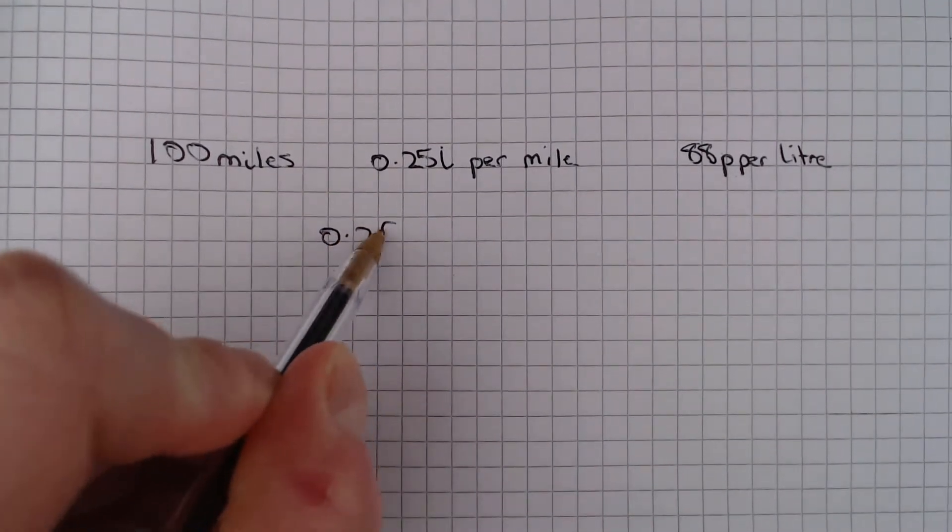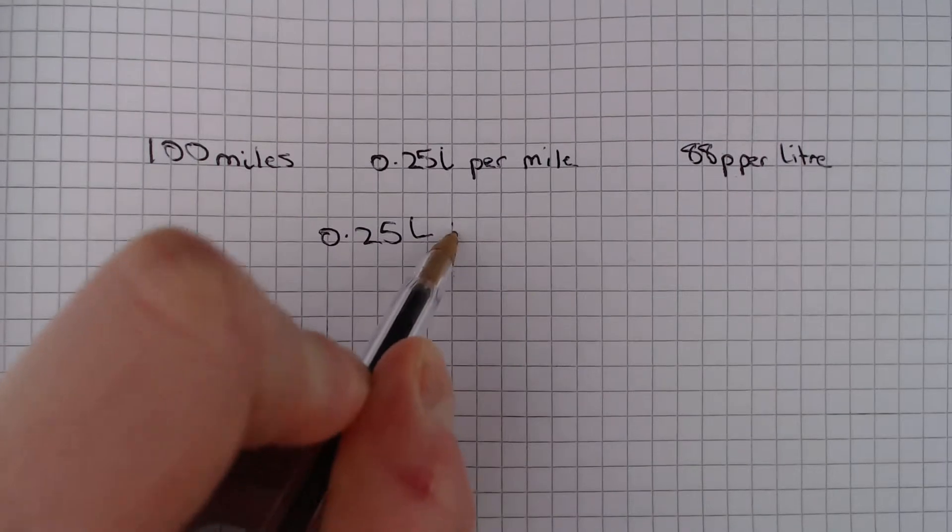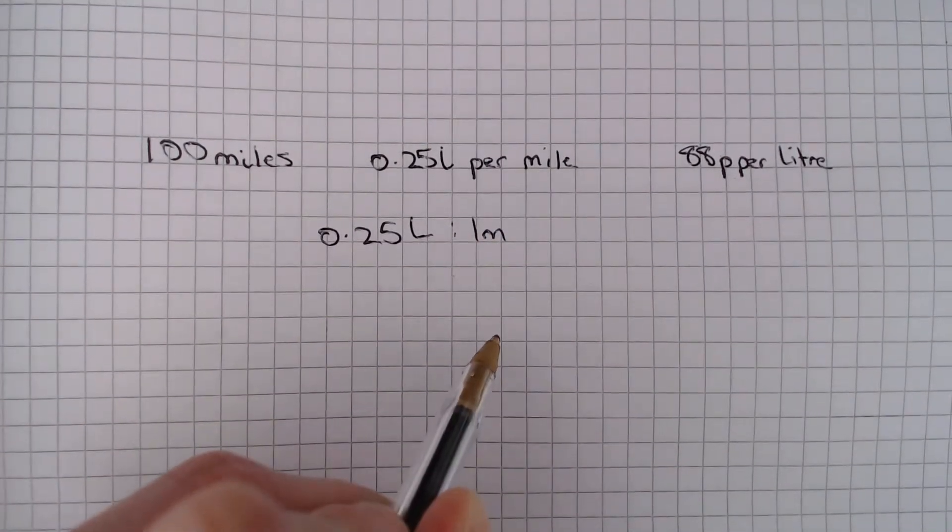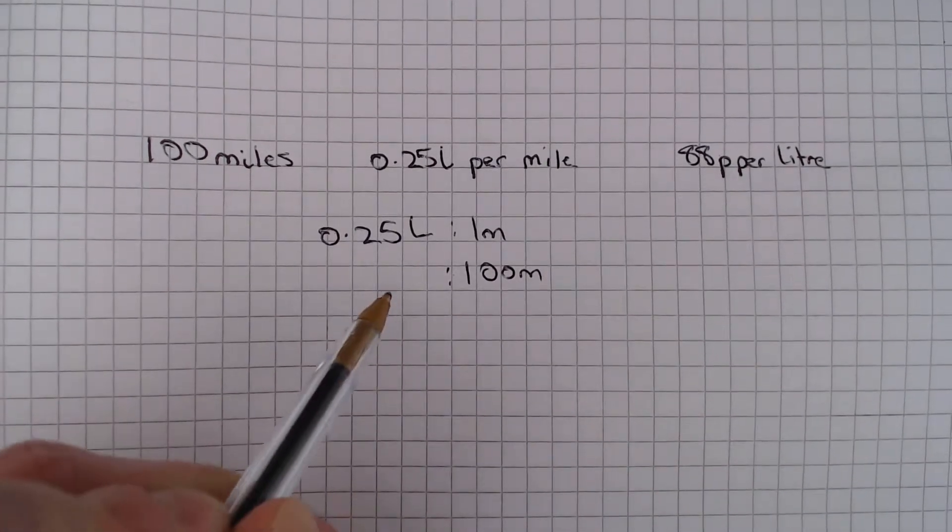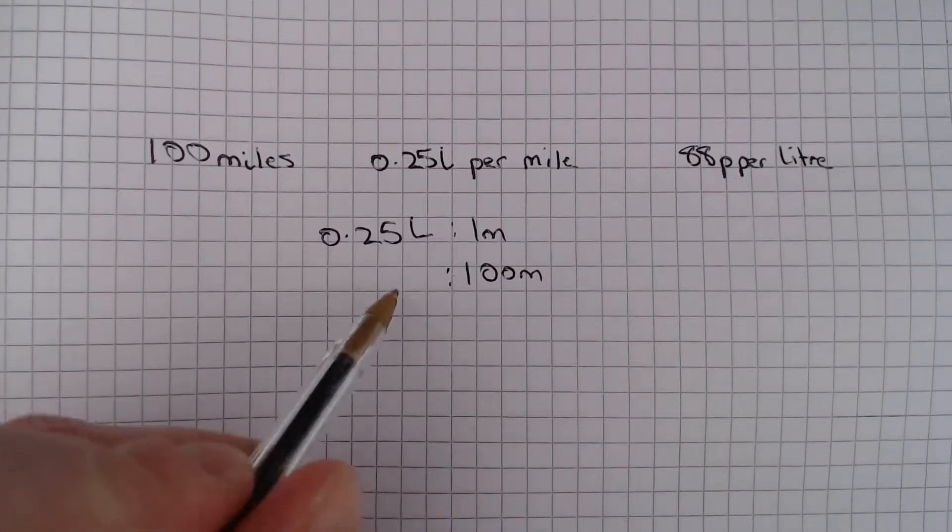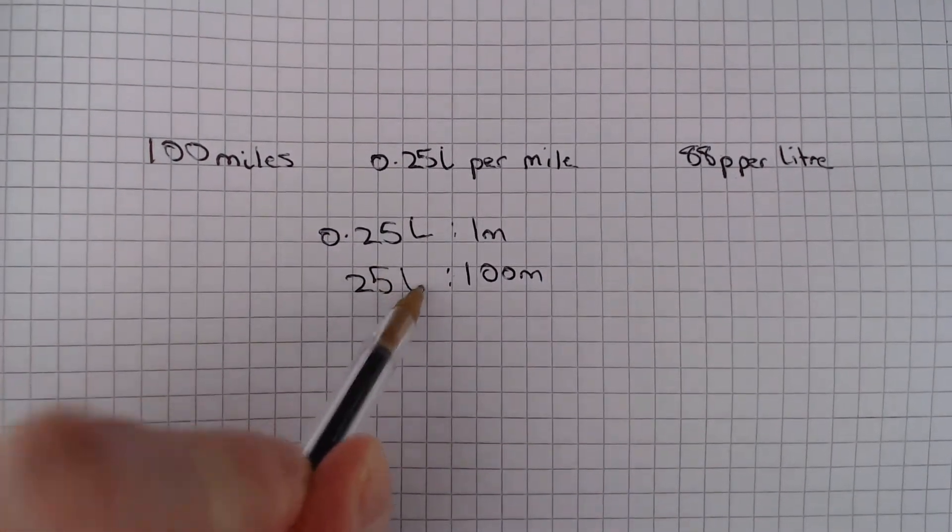So if the minibus uses 0.25 litres of fuel per mile, then for the 100 mile journey it obviously uses 100 times 0.25 which is 25 litres of fuel.